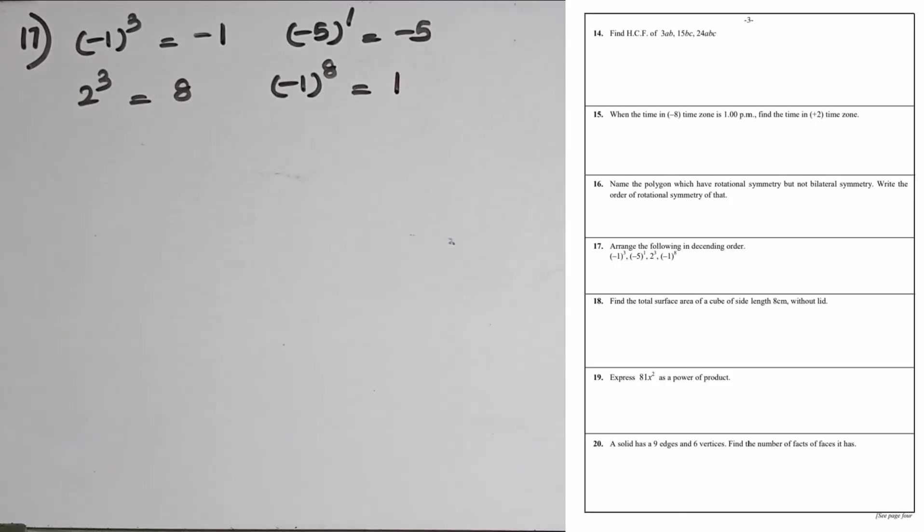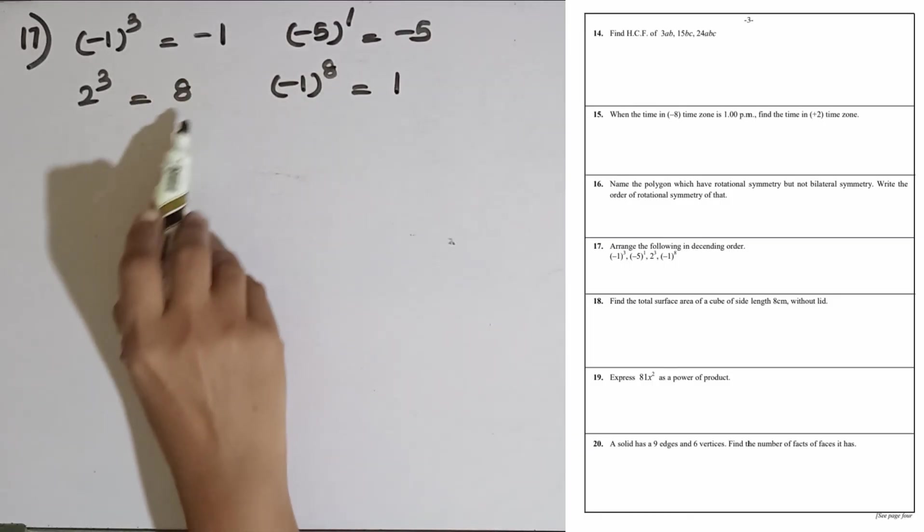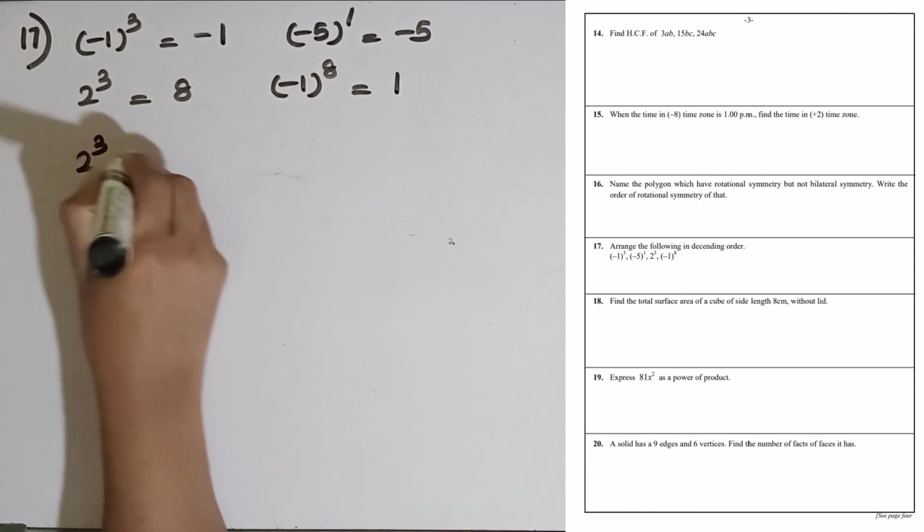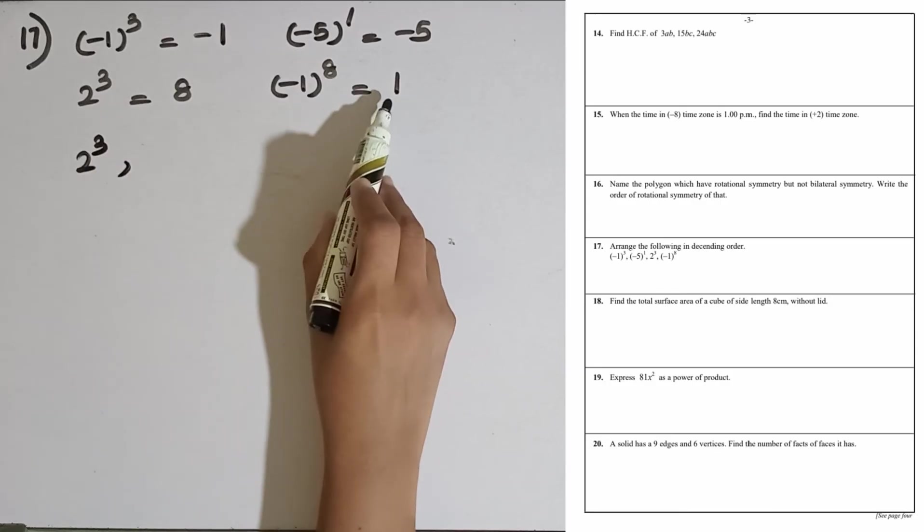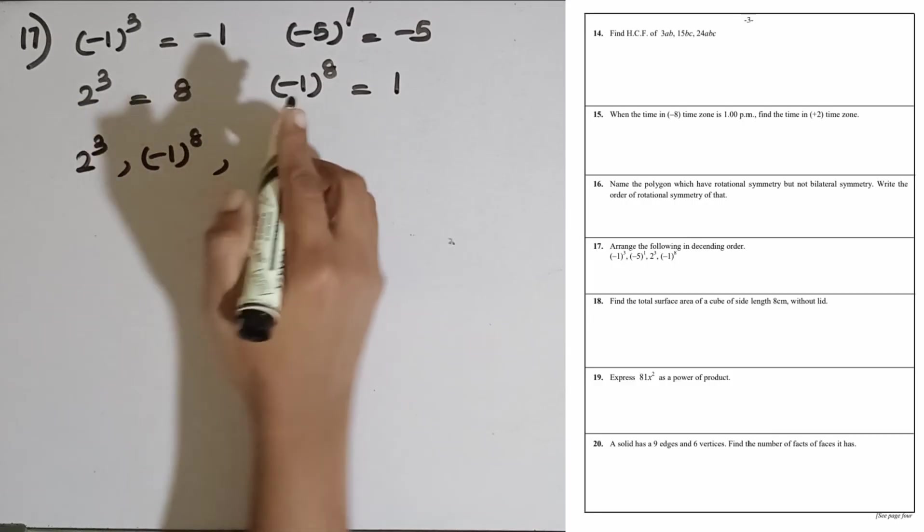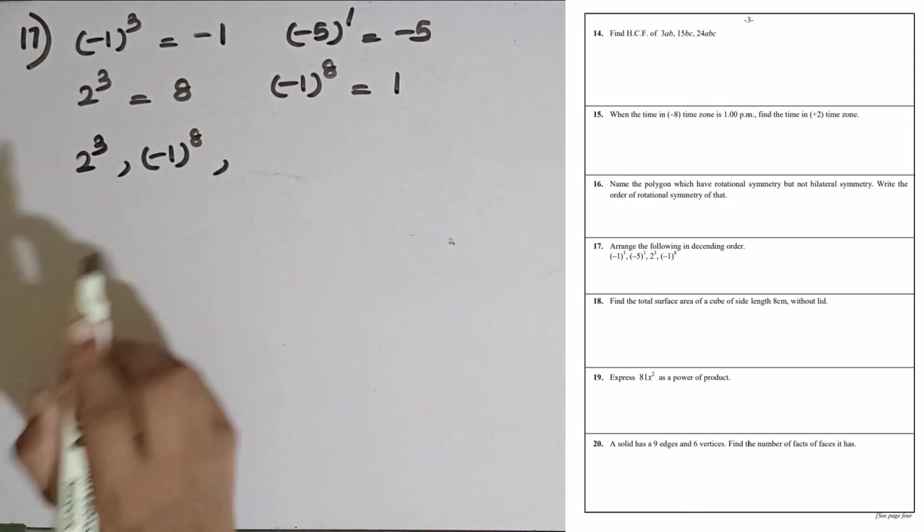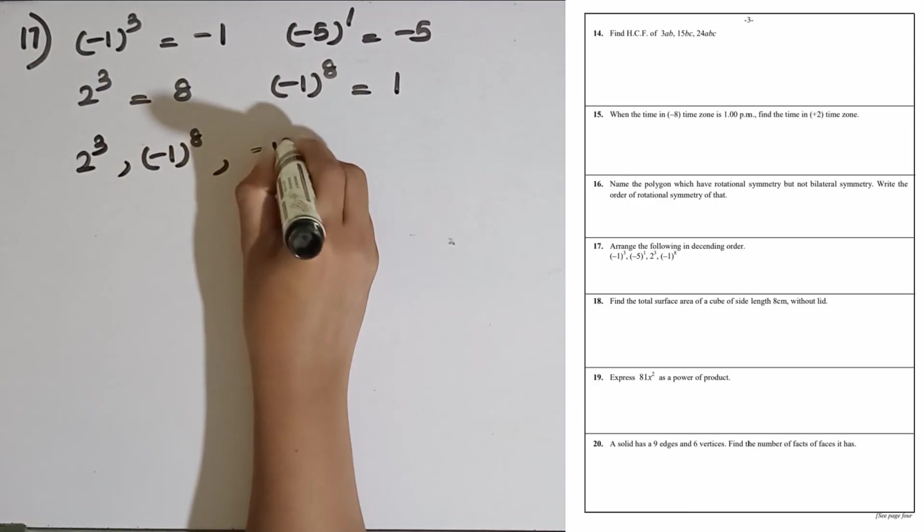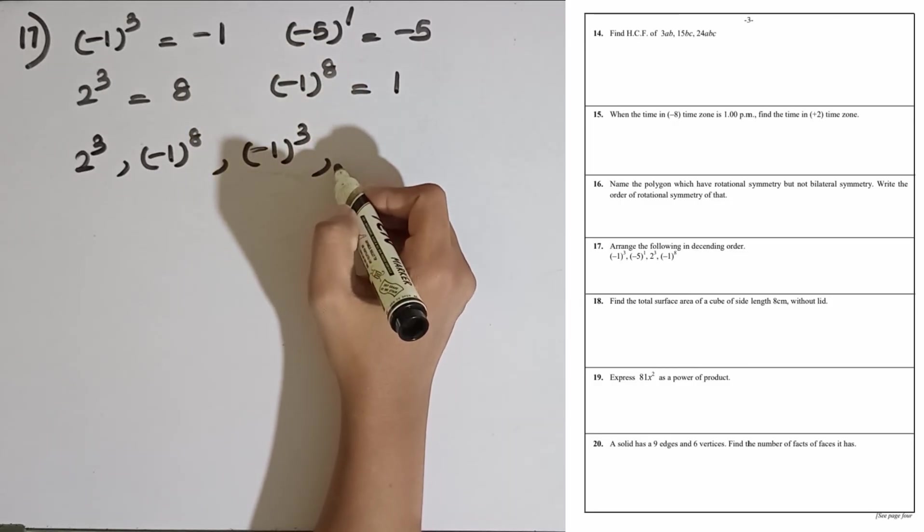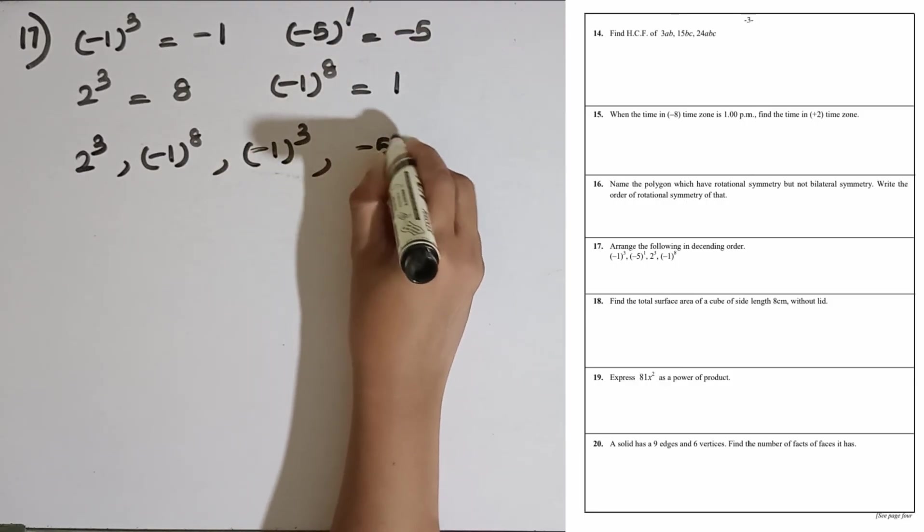We have to arrange them in descending order, that means the largest one to the smallest one. The largest value is 2 to the power 3 first, the next one is minus 1 to the power 8. If you compare minus 1 and minus 5, minus 1 is the largest, so minus 1 to the power 3. The last one is minus 5 to the power 1.